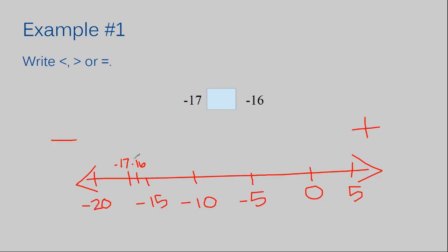So negative 16 is larger than negative 17. When we use our inequalities, some teachers explain it as the mouth of an alligator — the alligator always wants to eat the number that is more. In this case, the alligator would eat the negative 16 because negative 16 is more than negative 17. For this example I didn't have to worry about changing the forms of my numbers — they were both integers, so no converting needed.